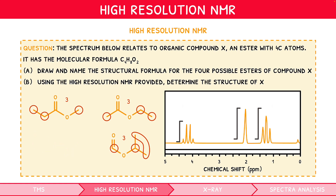Looking at the integration trace, we have a ratio of 2:3:3. 1-methylethyl ethanoate does not fit this ratio. However, both remaining molecules do, so let's look at the splitting pattern. The leftmost peak of ratio 2, relating to the CH₂ group, has four split peaks, indicating it is adjacent to an environment containing three protons — however, this is the case in both. The middle peak of ratio 3, relating to a CH₃ group, has no split peaks, indicating it is adjacent to no protons — however, this too occurs in both. The rightmost peak of ratio 3, relating to the other CH₃ group, has three split peaks, indicating it is adjacent to two protons, i.e. the CH₂ group — however, this too is the case in both.